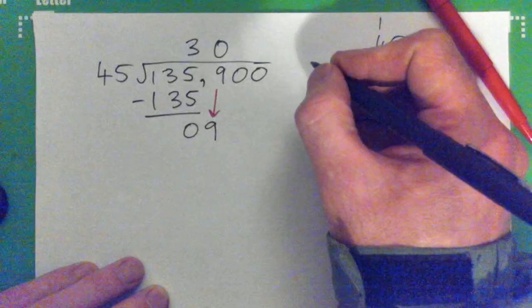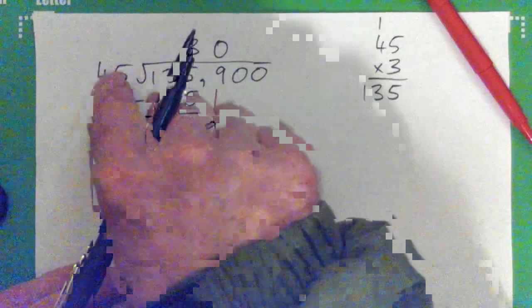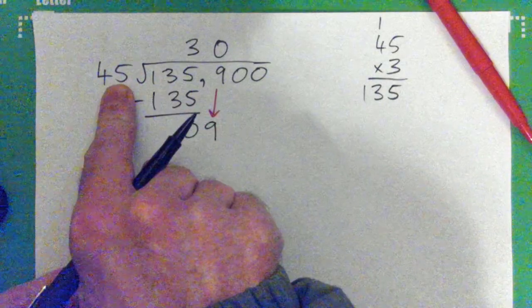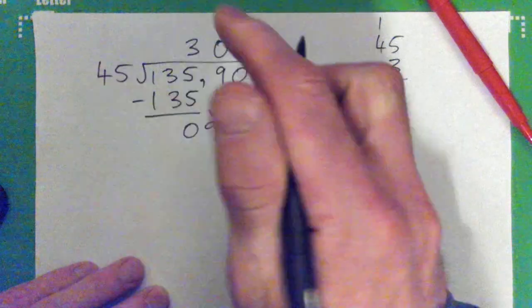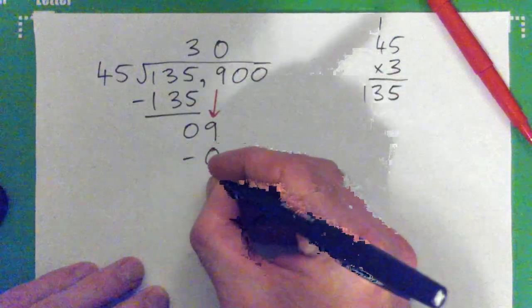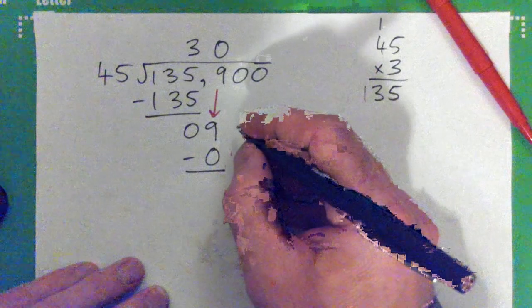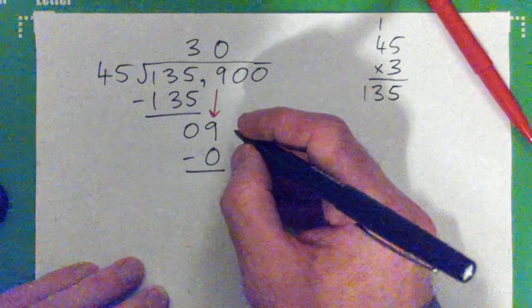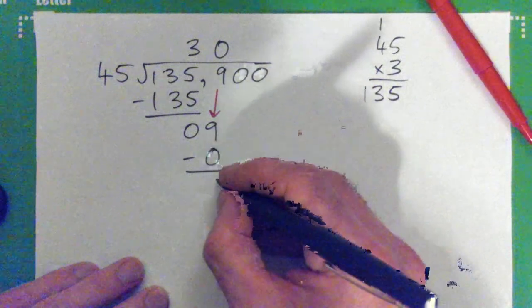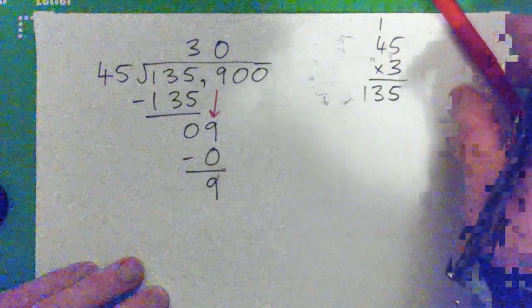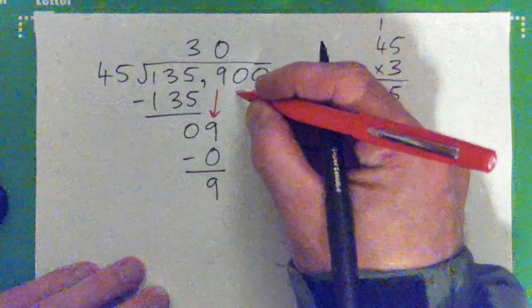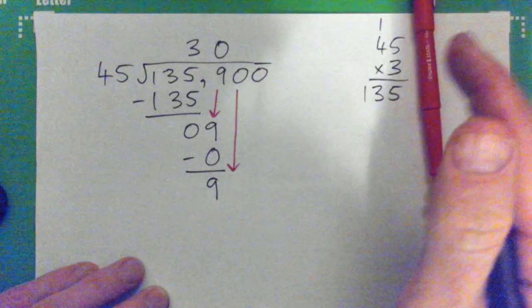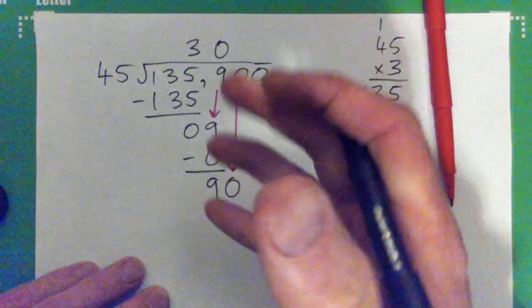You go 0 times 45 is 0. Subtract and get 9. It would have been the same thing anyway, it wouldn't matter. But I guess I'm just going to keep going with the same method because it's consistent.